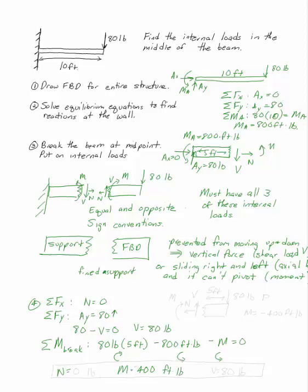N equals zero pounds, M is 400 foot pounds, and V is 80 pounds.